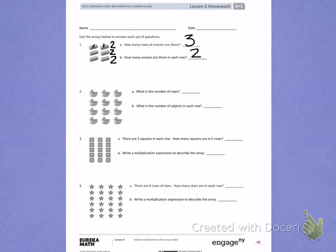Number 3, Letter A: There are 3 squares in each row. How many squares are in 5 rows? I've already been told there are 3 squares in each row, so the first row has 3 squares.